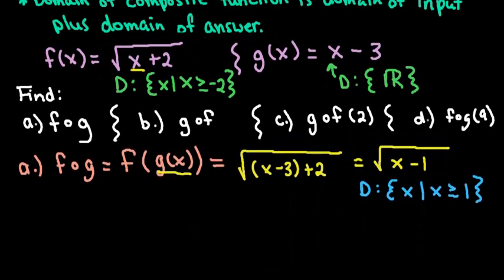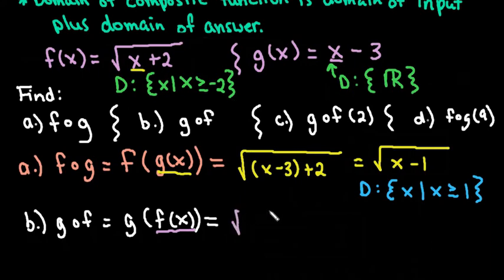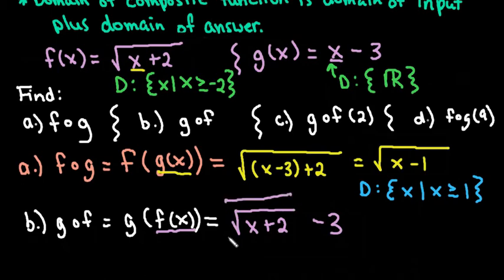For the next one, we're going to find g of f, leaving it in terms of x — so this is g of f of x. We're going to take our f of x equation, the square root of x plus 2, and replace the x in the g of x equation with that value. So I replace x with the square root of x plus 2, giving me the square root of x plus 2 minus 3. I cannot simplify anything further, so this is my final answer.